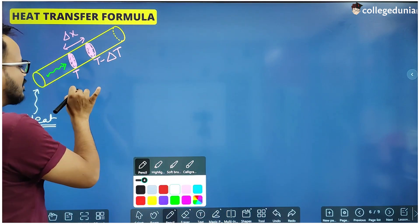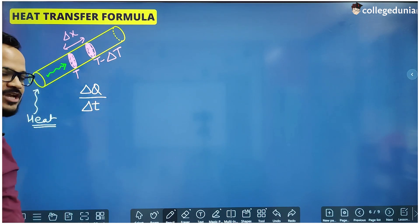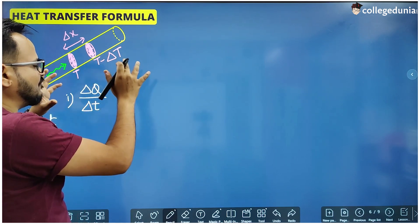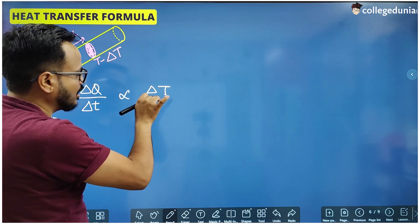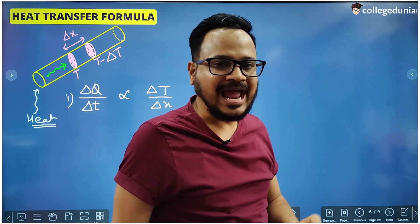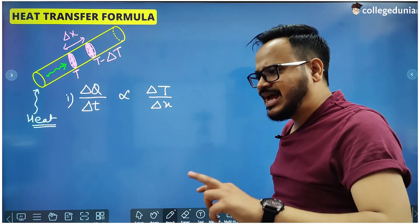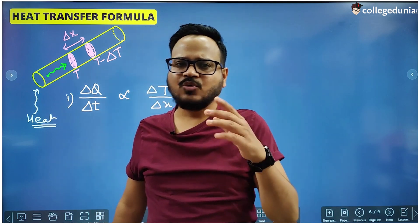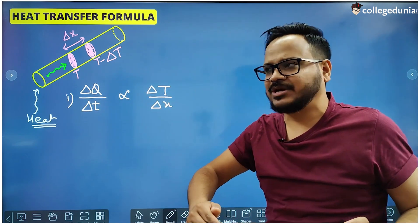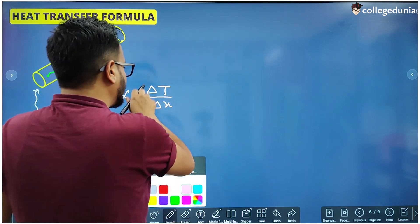The rate of flow of heat, given as delta Q divided by delta t, depends — number one — on the temperature difference divided by the distance, which is called the temperature difference per unit length. In physics terms it is called the temperature gradient. Anything taken with respect to length — velocity difference, pressure difference, or temperature difference — is termed a gradient.